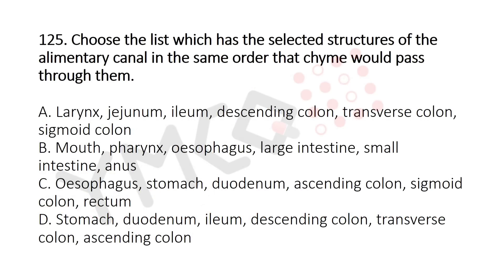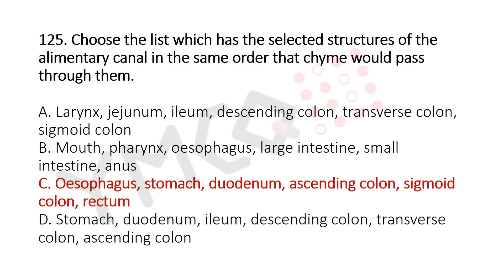Now Question 125: Choose the list which has selected structures of the alimentary canal in the same order that food would pass through. Option A: larynx, jejunum, ileum, descending colon, transverse colon, sigmoid colon. Option B: mouth, pharynx, esophagus, large intestine, small intestine, anus. Option C: esophagus, stomach, duodenum, ascending colon, sigmoid colon, rectum. Option D: stomach, duodenum, ileum, ascending colon, transverse colon, ascending colon. The answer is Option C: esophagus, stomach, duodenum, ascending colon, sigmoid colon, rectum.